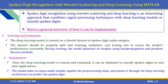The next step is Training and Evaluation. The deep learning model is trained on a labelled dataset of spoken digit audio samples. The dataset should be properly split into training, validation, and testing sets to assess the model performance accurately. During the training process, the model optimizes its weights using back propagation and gradient descent methods, typically with recurrent neural networks.